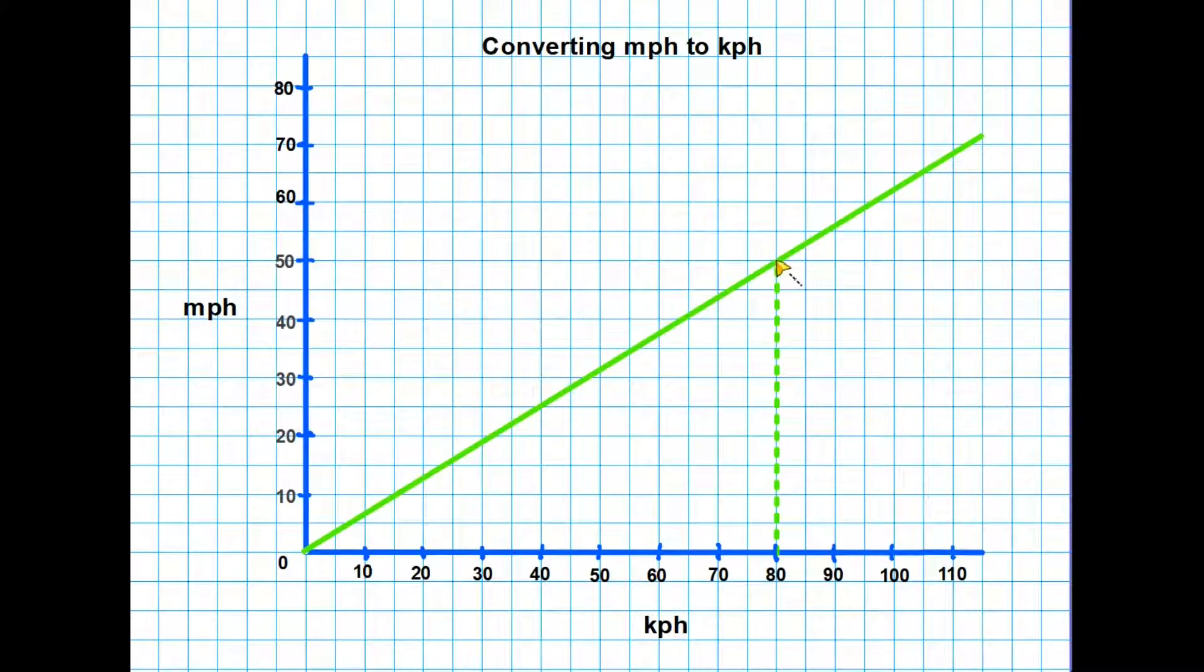We then read straight across the miles per hour line. It is important when you are actually answering a question like this that you keep your lines as accurate as you possibly can. Now that we've done that we can see that 80 kilometers per hour is exactly the same speed as 50 miles per hour.